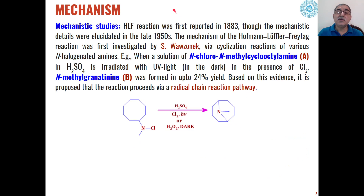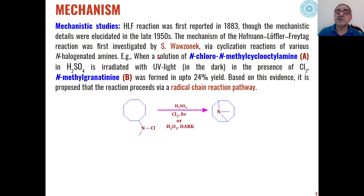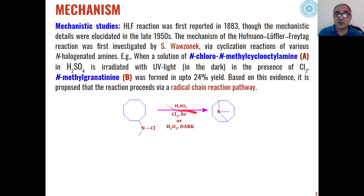The reaction was reported in 1883 and the mechanism was established over a period of 70 years, in the 1950s. The mechanism was mainly investigated by Vasonic and later on by Khoury. Vasonic concluded that a radical chain reaction pathway is involved.